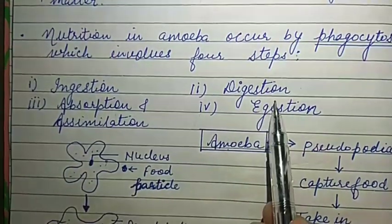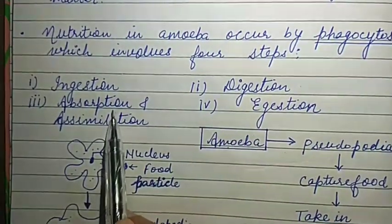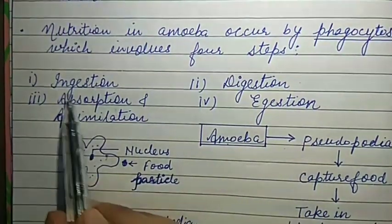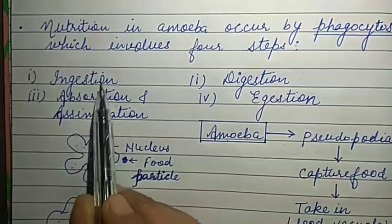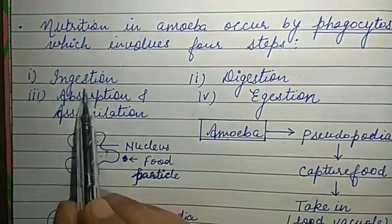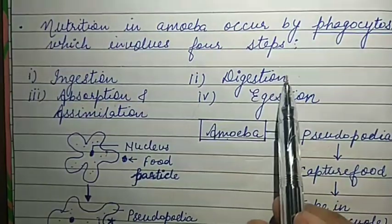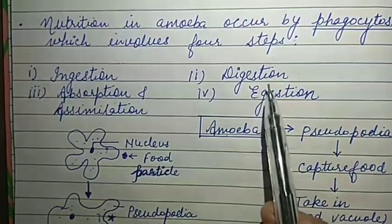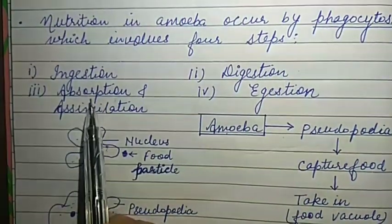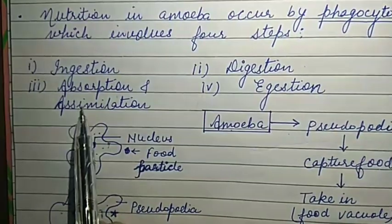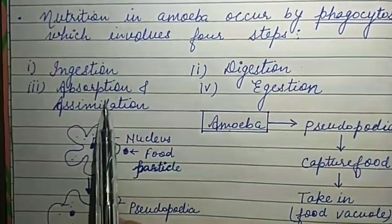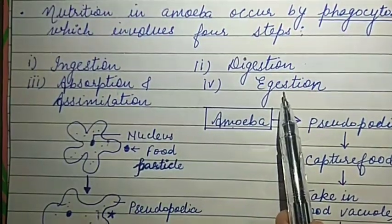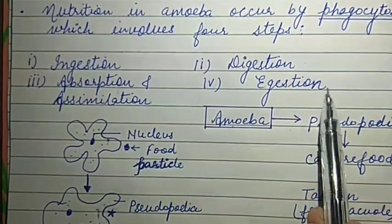The four steps are: first, ingestion; second, digestion; third, absorption and assimilation; and the last is egestion. Ingestion is the process of taking food in. When food enters the buccal cavity, digestion starts and completes. The nutrients present are absorbed and circulate to each and every cell in the body. Finally, the waste — the fecal matter — moves out from the body.